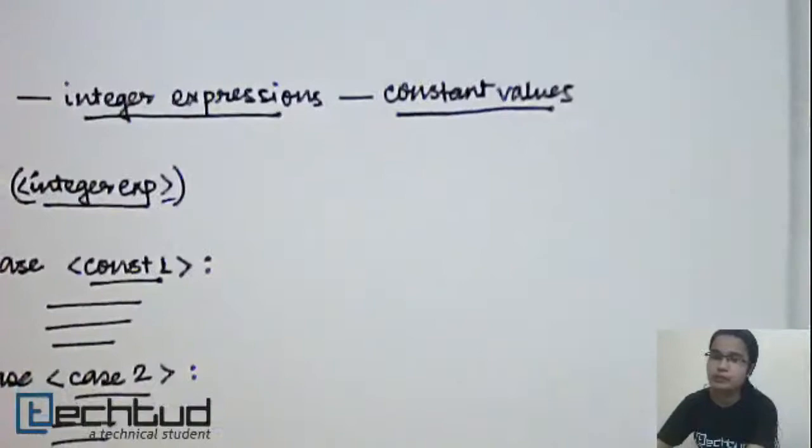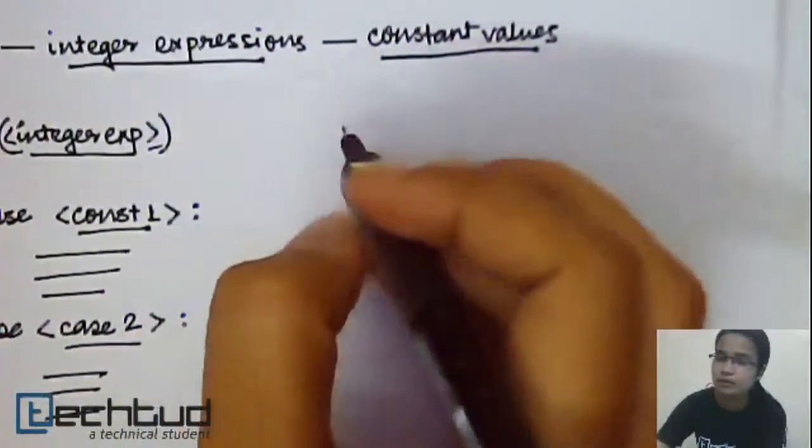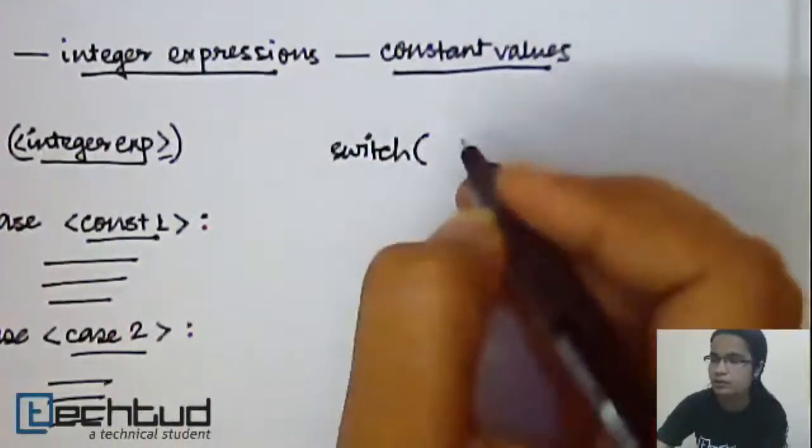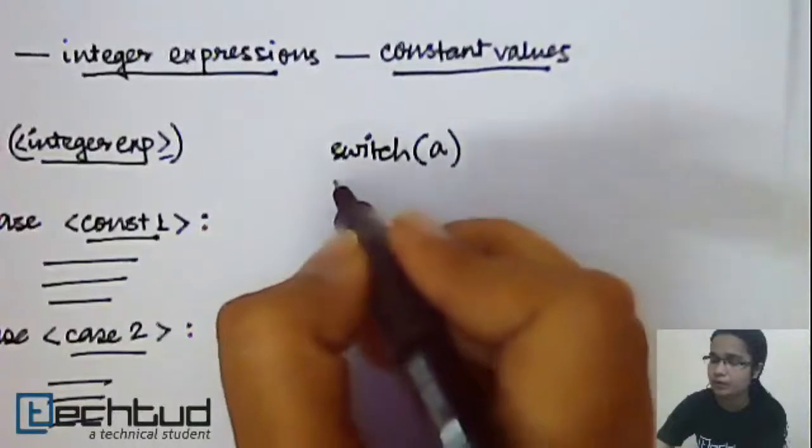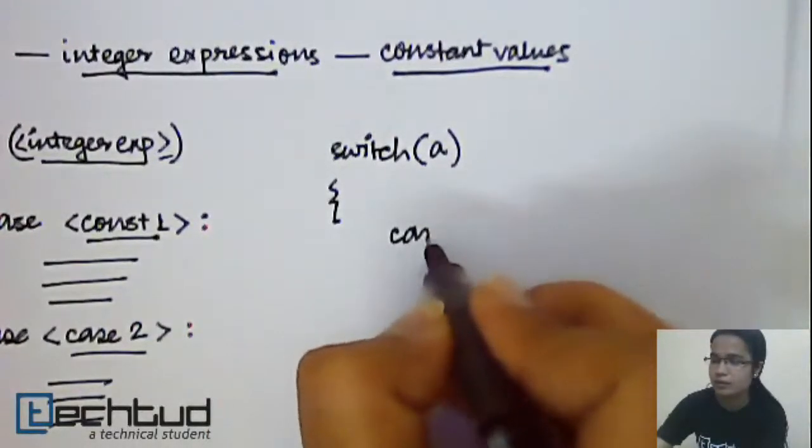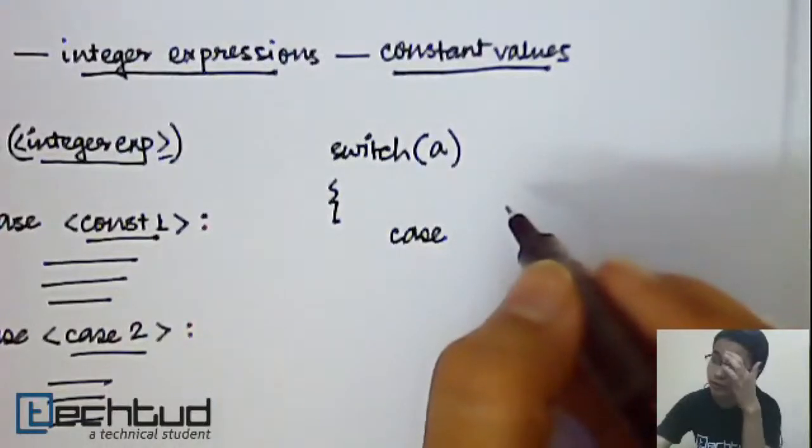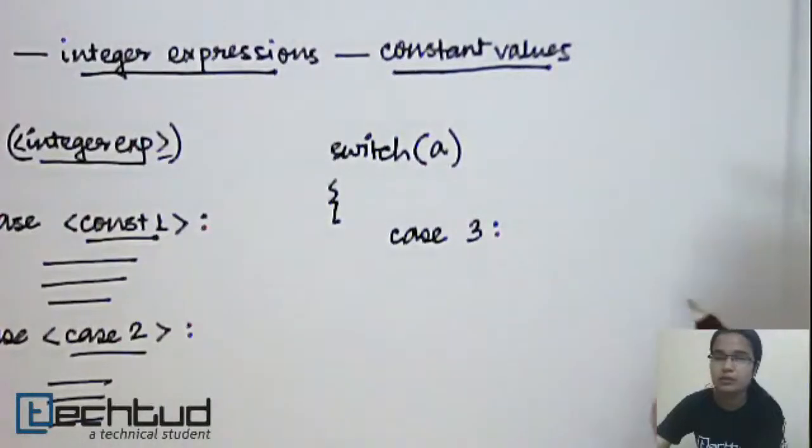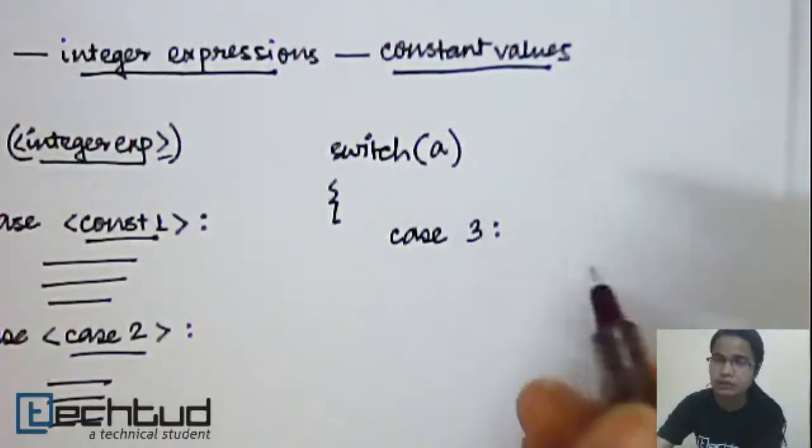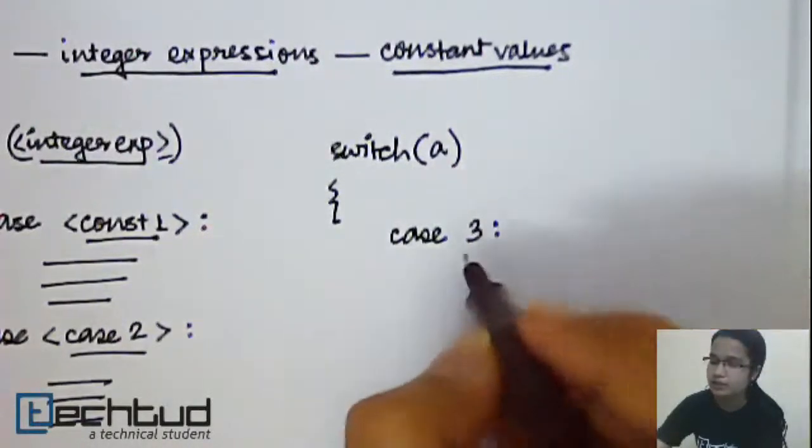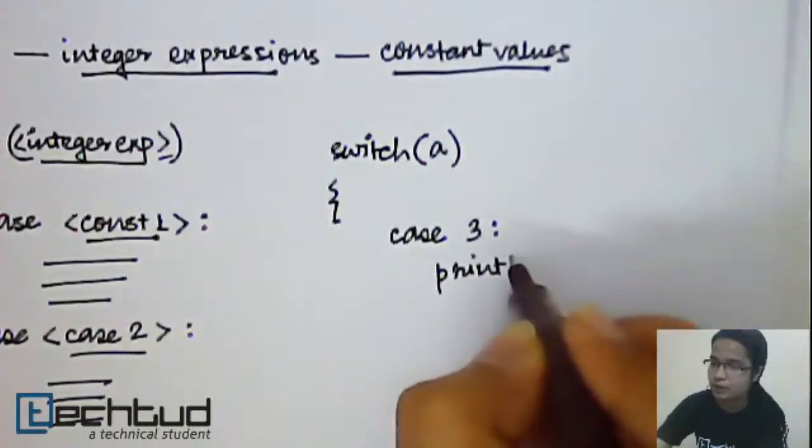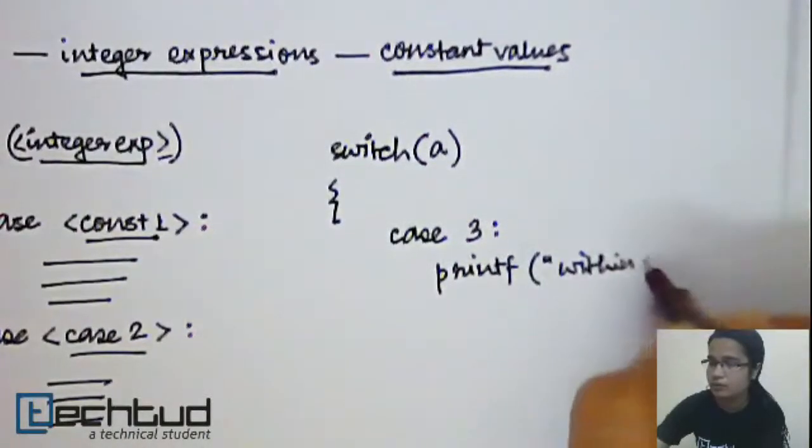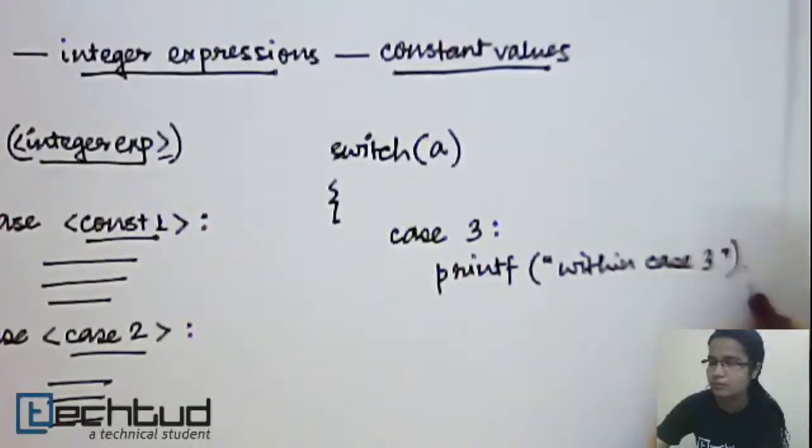So let's take an example. Like, you are doing switch, maybe a is an integer. Then, if you want to check for values, maybe constant value 3. So you write 3, then colon. So whenever a's value is 3, then the control will come to this case. And maybe you write printf within case 3.